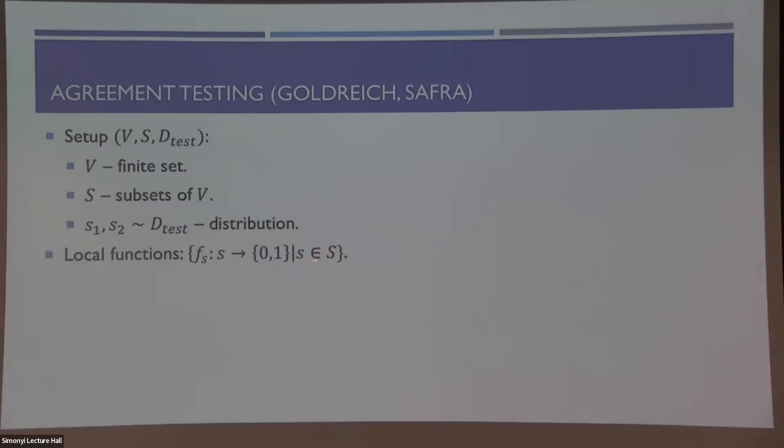S will be a collection of subsets of V, and we will also have a distribution, which are called the test, which is just a distribution over pairs of subsets. The objects that they were looking to study are these sets of local functions. For every little s in the collection of subsets, we have one function f of s that's only defined on the points inside s to some finite alphabet, maybe 0, 1. The property that they were trying to study was whether the set of local functions actually comes from one function on the whole vertex set.